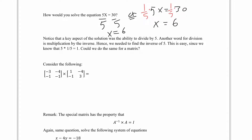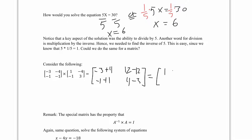Could we do the same for a matrix? Our matrix A is [1, -4, -1, 3]. Can we find a matrix that when multiplied by A gives the identity? Let's test a candidate matrix. Multiplying gives: negative 3 plus 4 equals 1; 12 minus 12 equals 0; negative 1 plus 1 equals 0; and 4 minus 3 equals 1. So we get the matrix [1, 0, 0, 1] — the identity matrix!